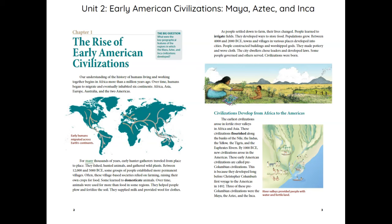For many thousands of years, early hunter-gatherers traveled from place to place. They fished, hunted animals, and gathered wild plants. Between 12,000 and 5,000 BCE, some groups of people established more permanent villages. Often, these village-based societies relied on farming, raising their own crops for food. Some learned to domesticate animals.